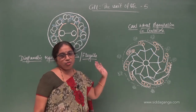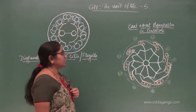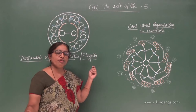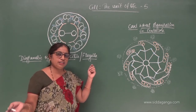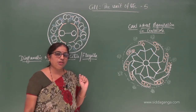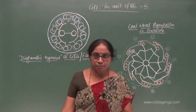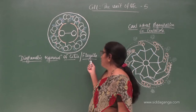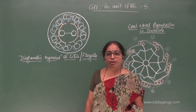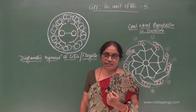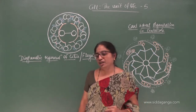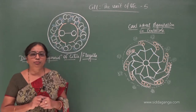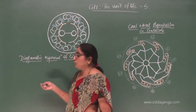Cilia and flagella — cilia is the plural form, flagella is also the plural form. The singular form of cilia is cilium and the singular form of flagella is flagellum. Both are locomotory structures which you might have already studied in protozoans. In paramecium you can see cilia-like structures, and in euglena you can see the structure called flagella. The prokaryotic flagella is quite different from the flagella of eukaryotic cells. Both serve as locomotory structures and help in the movement of unicellular organisms.